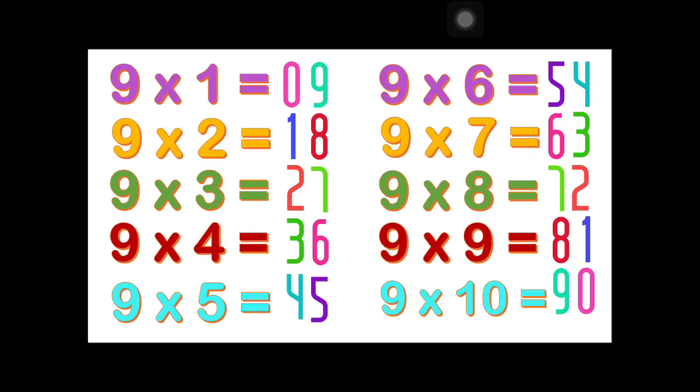0 plus 9 equals 9. 1 plus 8 equals 9. 2 plus 7 equals 9. And so on.